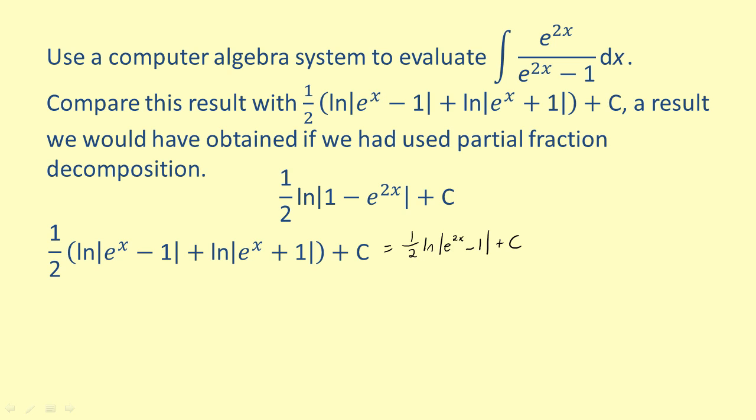Now if we factor out a negative 1, we get 1 half times the natural log of the absolute value of negative 1 times 1 minus e to the 2x plus c.